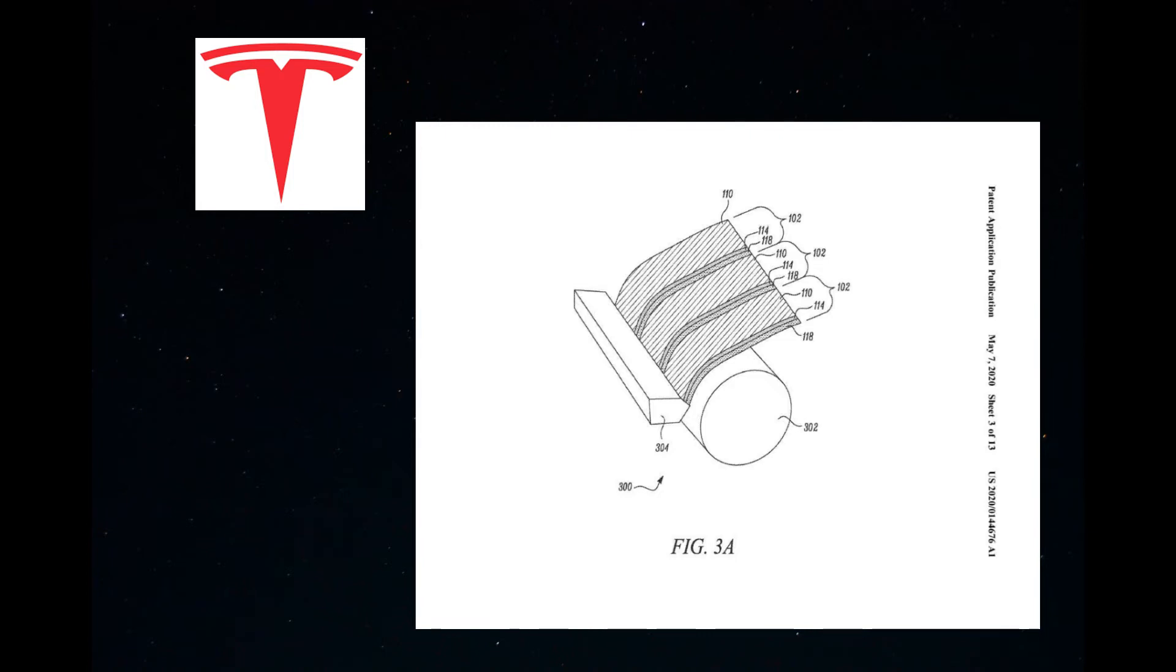By using the conductive edge, Tesla seeks to reduce the distance that the current needs to travel, thereby also reducing the ohmic resistance.